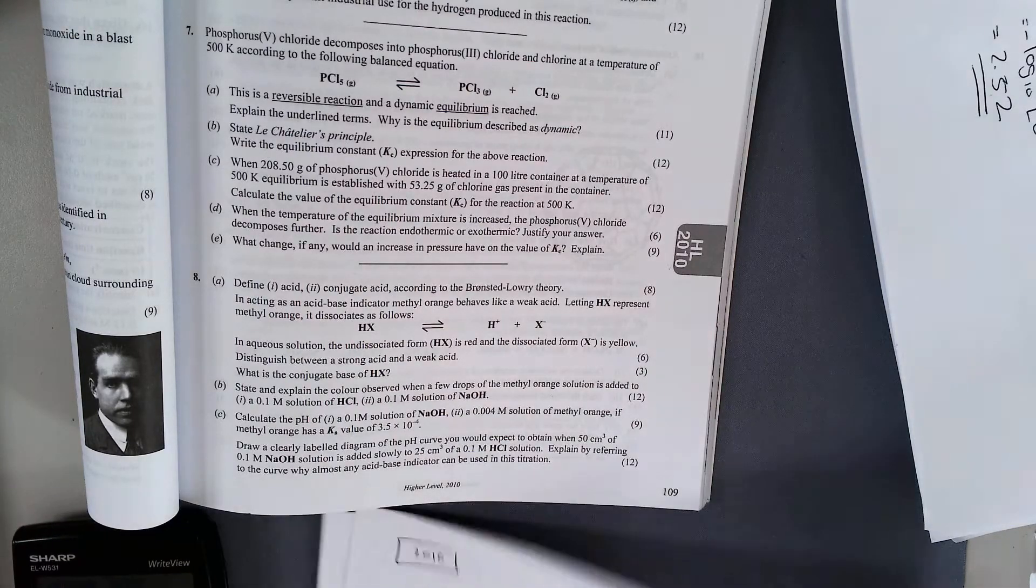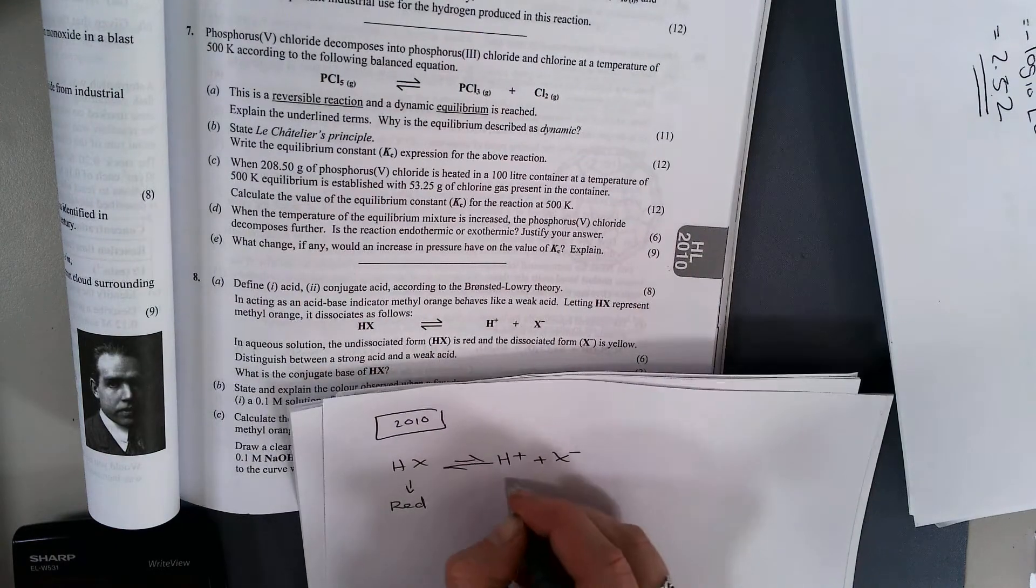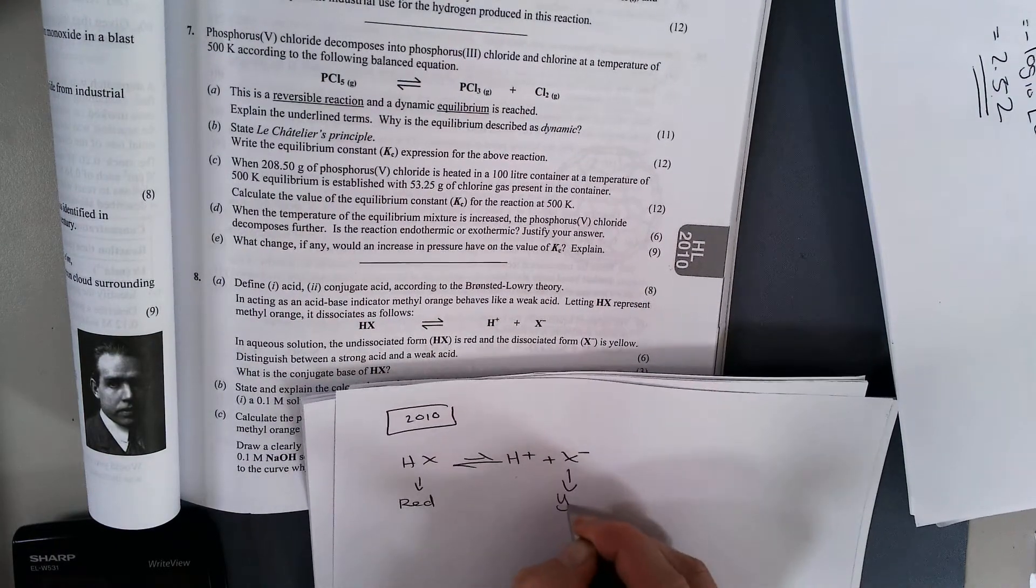The form that exists as HX is red, and the dissociated form, X minus, is yellow.